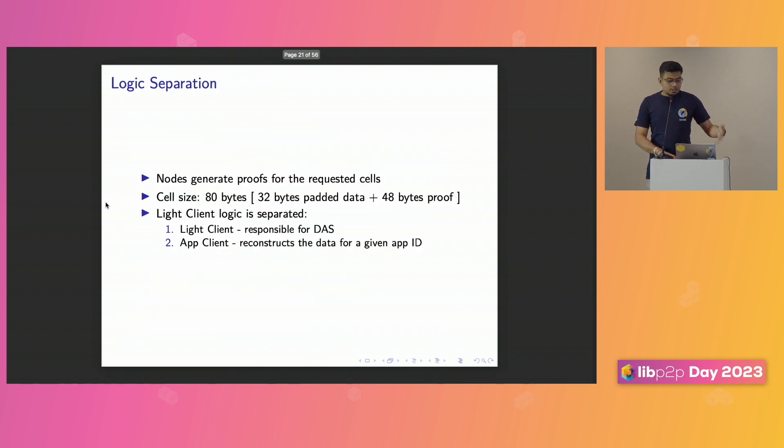And we did some kind of logical separation. The nodes generate proofs for the requested cells. The cells are 32 bytes of padded data because of BLSTL 381, as I mentioned, and 48 bytes of proof, which is the elliptic curve points. So together, they provide these 80 bytes of cells. And that's why we have done a logical separation in the client. The light client is responsible for data availability sampling, but at the same time, we have an app client which reconstructs the data for a given application ID.